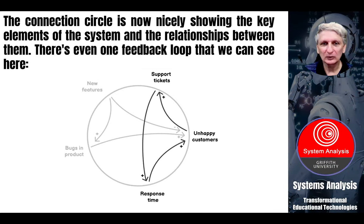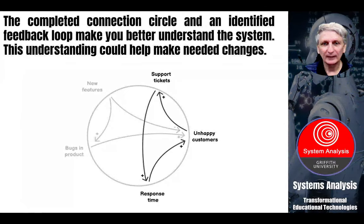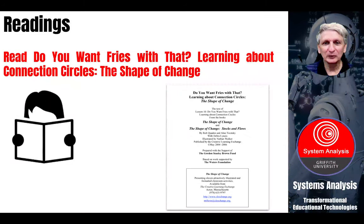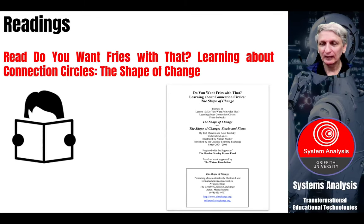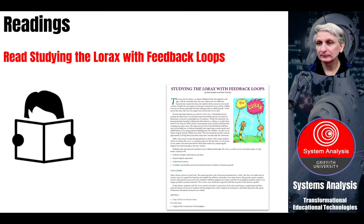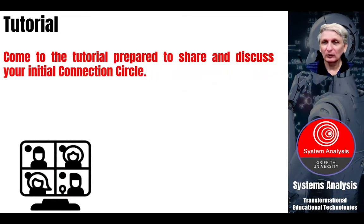The first loop does form a nice causal feedback loop, but the grayed-out one does not. Other examples you'll find in the readings: the first one is 'Do You Want Fries With That?' looking at a fast food restaurant and the various systems within it and how to identify the various interactions. The other example is from a storybook called The Lorax, looking at the interactions of characters within the story and how they impact and affect one another. Come to tutorial again with your initial connection circle, having looked at those examples, and we'll explore and discuss what can be done with connection circles in more detail. That's it for this week and I look forward to seeing you in the tutorial.